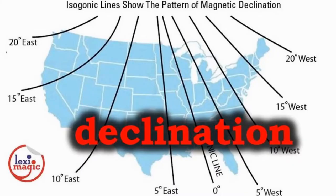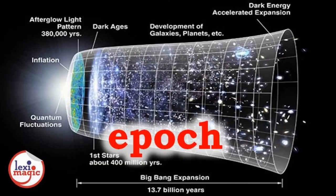Declination is the angular distance of a celestial object in relation to the earth. Epoch is a phase in the development of the universe after the Big Bang.